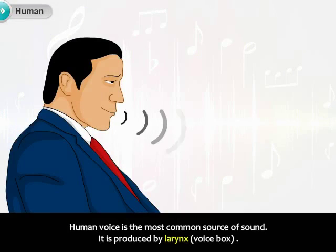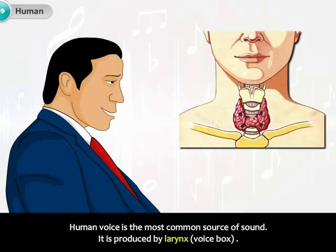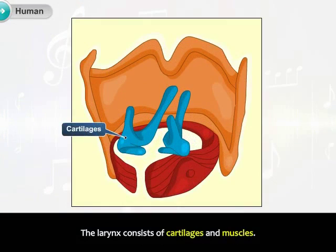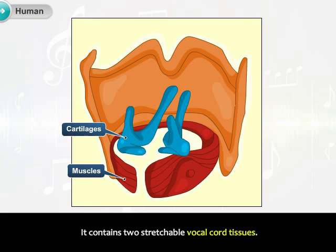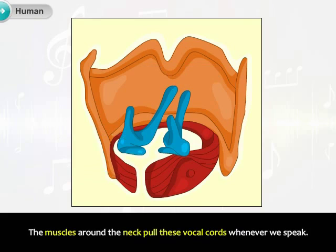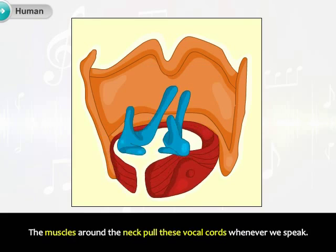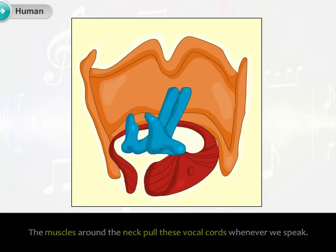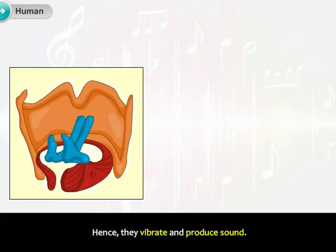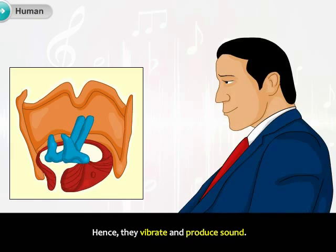Human voice is the most common source of sound. It is produced by the larynx. The larynx consists of cartilages and muscles, and contains two stretchable vocal cord tissues. The muscles around the neck pull these vocal cords whenever we speak, causing them to vibrate and produce sound.